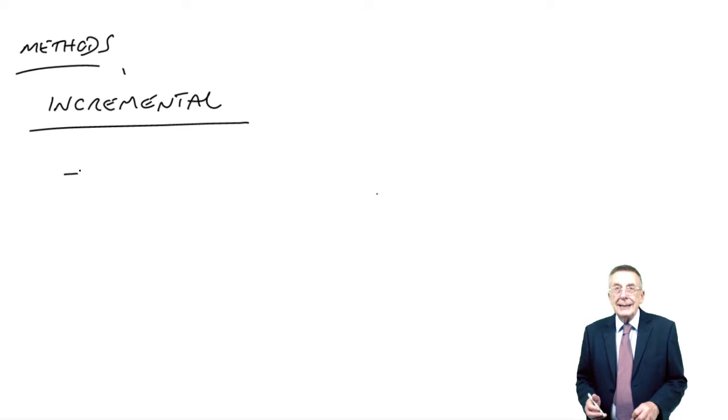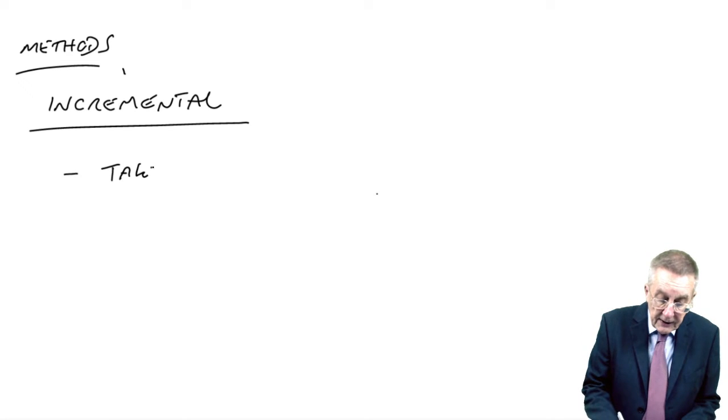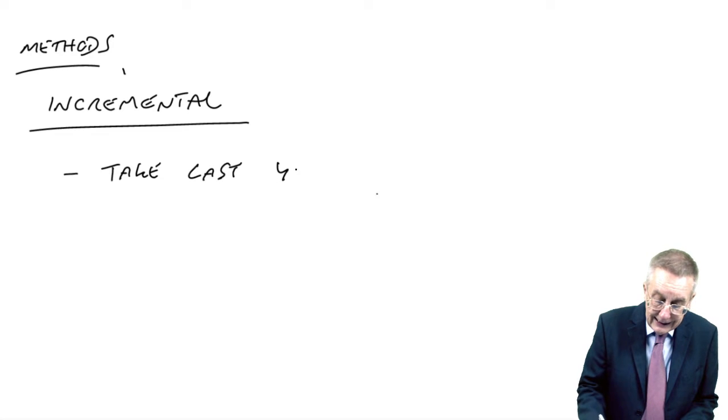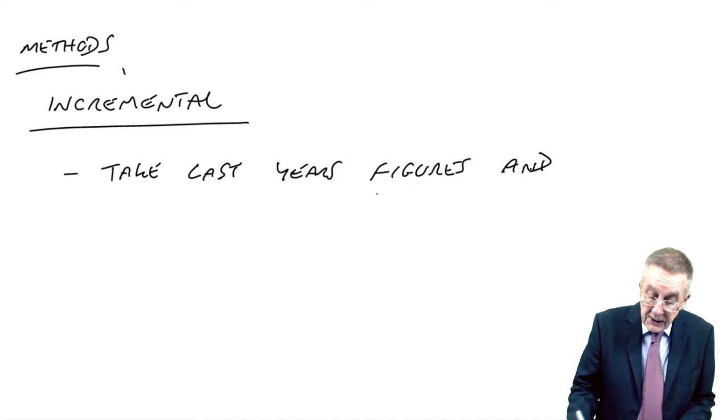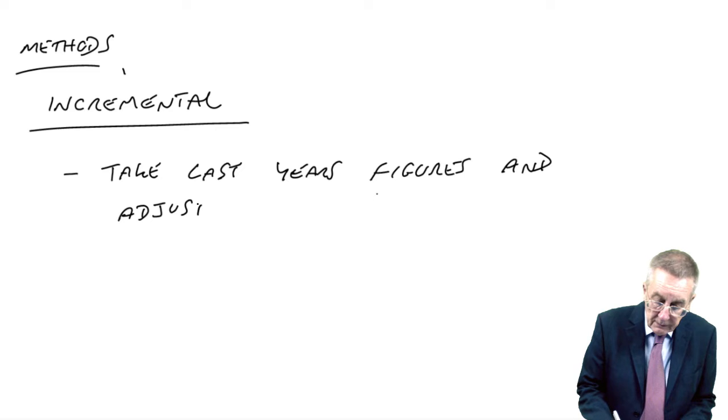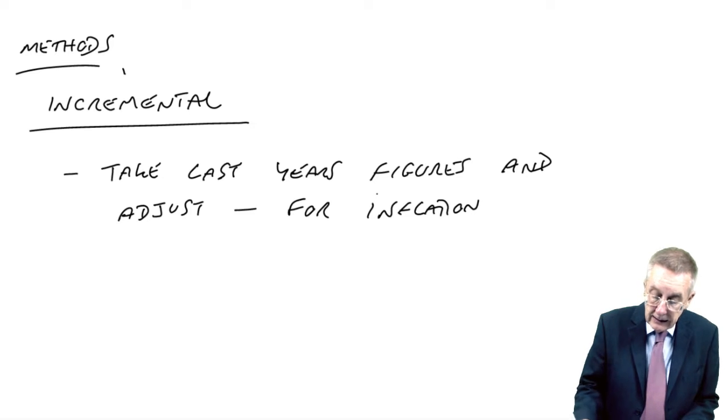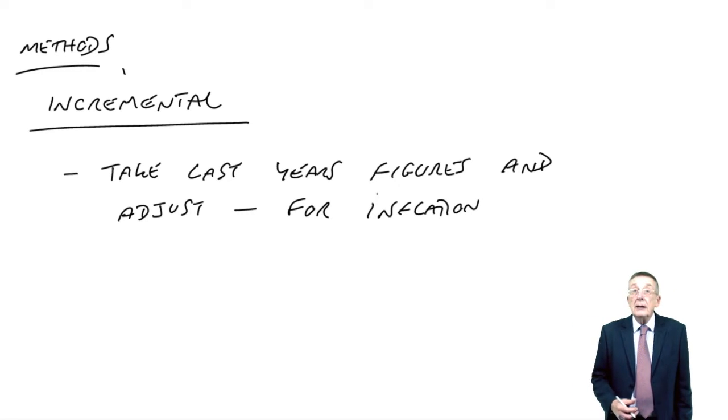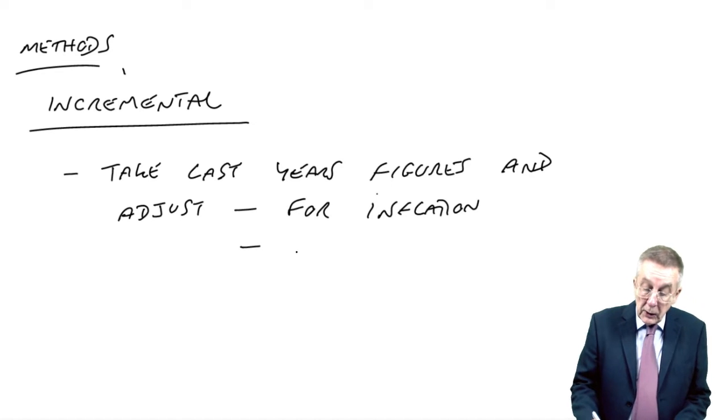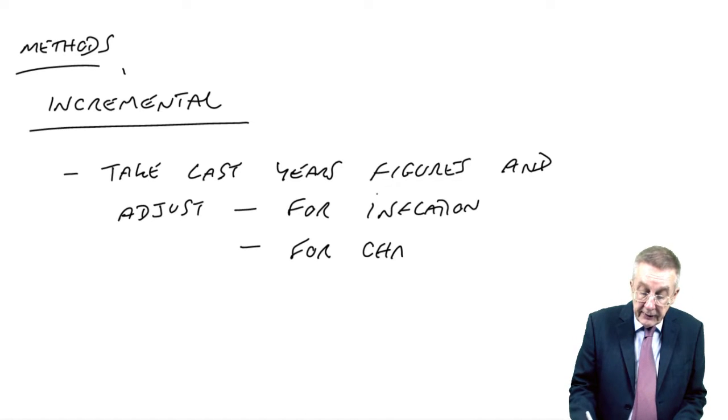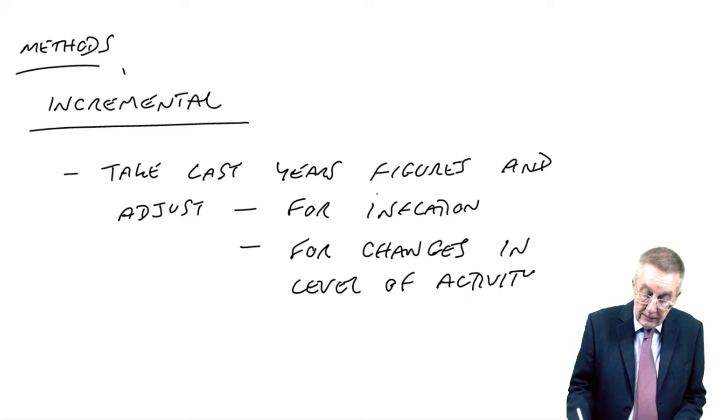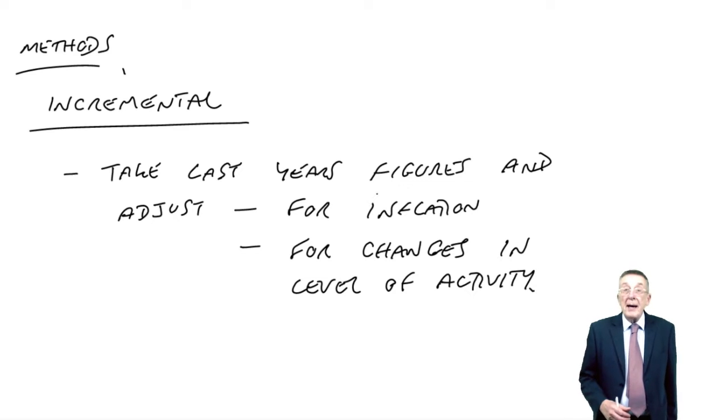What it is in outline is we take last year's figures and adjust, partly for inflation. If you think they're going to put the price up, fine, add on a bit. But also for changes in the level of activity. So that's what we mean by incremental.